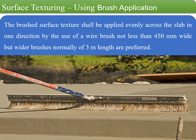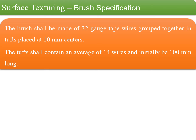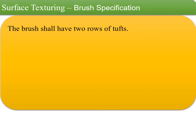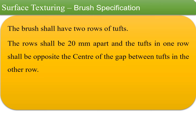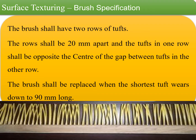The photograph shows the mode of manual texturing in the presence of an automated texturing machine. The brushes shall be made of 32 gauge tape wires grouped together in tufts placed at 10 millimeters center to center. The tufts shall contain an average of 14 wires and initially be 100 millimeters long. The brush shall have two rows of tufts; the rows shall be 20 millimeters apart and the tufts in one row shall be opposite the center of the gap between the tufts in the other row. The brush shall be replaced when the shortest tufts wear down to 90 millimeters long.